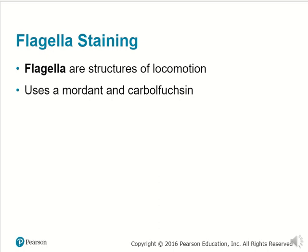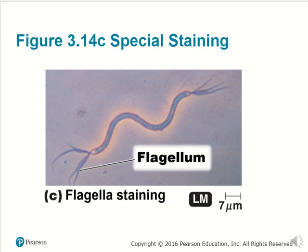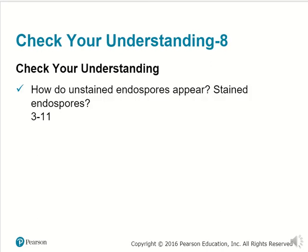Flagella staining: flagella are structures used for the movement of a cell. It uses a mordant and carbolfuchsin to help distinguish the flagella of your specimen. That concludes our chapter three lesson on microscopy. We'll get into our next lesson very shortly.